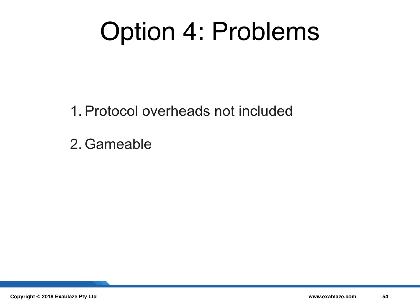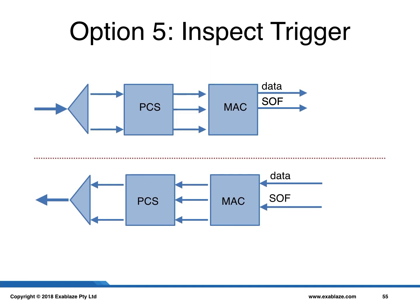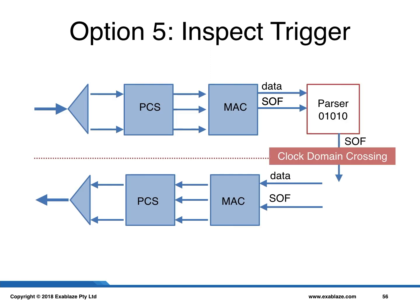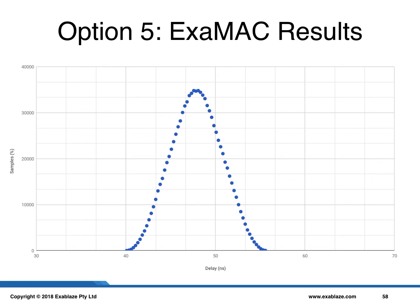A slight modification on option 4 is what we call inspection with a trigger. Packet data arriving on the RX side is inspected — specifically, the first four bytes of the Ethernet destination address are inspected and checked against a bitmask. Assuming the bitmask matches, a start-of-frame signal is crossed into the transmit clock domain, triggering a frame which is then sent. This option is a more realistic representation of a tick-to-trade scenario, with a market-data parsing-like operation causing a trigger. The median latency is 47.83 nanoseconds and the minimum is 40.08 nanoseconds.